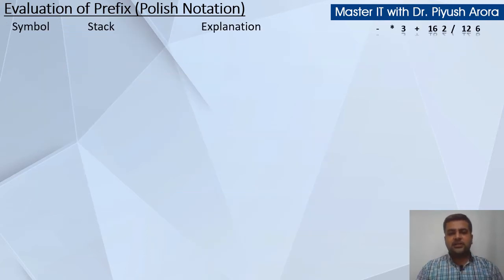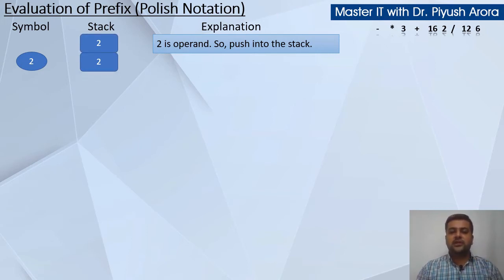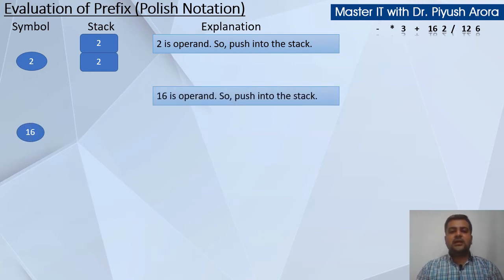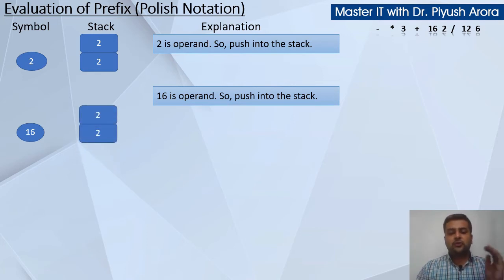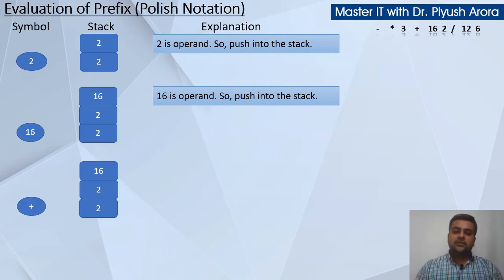Toh aapko ye bahut dhyan rakhna hai ki humein kaun se operand ko kahan rakhna hai. Aapke stack ke andar abhi 2 hai. Next expression dekhiye — right side mein scan karte hue, 2 is operand so push it into the stack. Next value scan kijiye — next is 16, so 16 is operand, push it into the stack. Stack mein pehle 2 tha, uske upar ek aur 2 tha, aur ab 16 ko bhi push kar denge. Next right side se scan karte hue — plus dikhta hai, and plus is an operator.